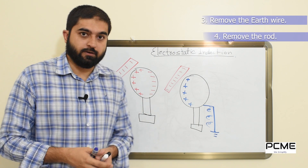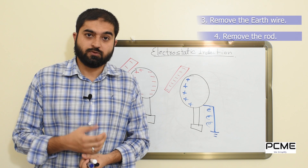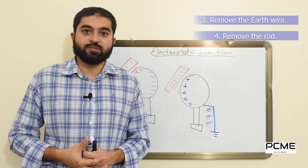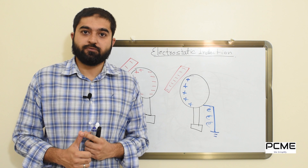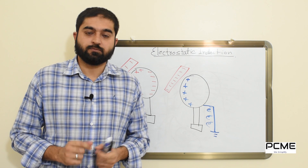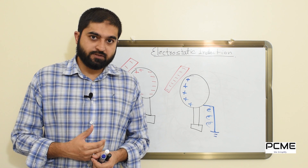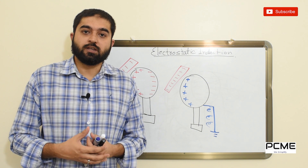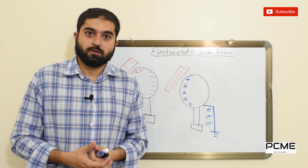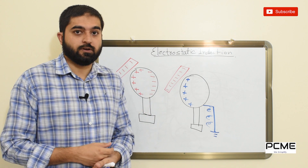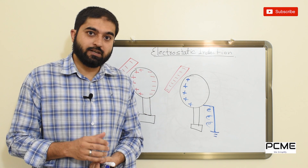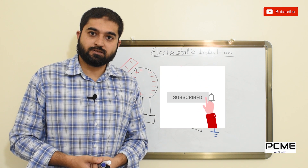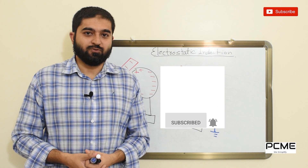Through the process of electrostatic induction you can charge an object. We have now discussed two ways in which any object can be charged electrostatically: number one, by friction, and number two, by electrostatic induction. Another thing established here is that during electrostatic induction, always the opposite charge is induced — when a negatively charged rod is brought close, the sphere becomes positively charged, and when a positively charged rod is brought close, the sphere becomes negatively charged. That's all for today — I hope you enjoyed the video.